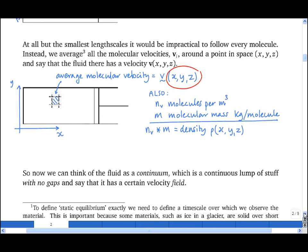So having made that conceptual leap, we now think of the fluid as a continuum, which is a continuous lump of stuff with no gaps, and we forget about the molecules. Furthermore, we say that this continuum has a certain velocity field and density field. By field we mean it is defined at points in space.